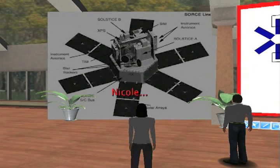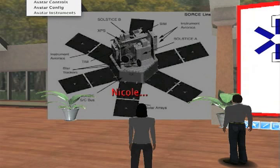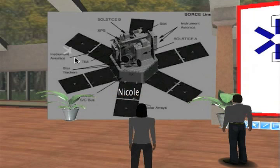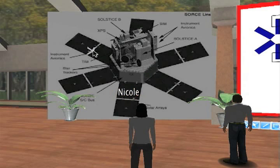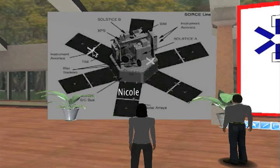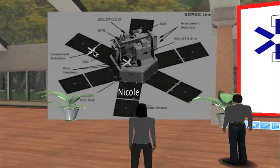If I get my telepointer, the solar arrays are here and it does say something about instrument avionics over here, which is a little surprising. I actually think this whole area in the middle here is where the avionics are. I found a 3D model on the web — maybe I'll just drop it into the world and we can look at that.